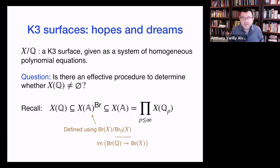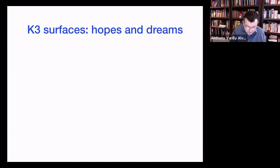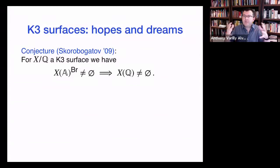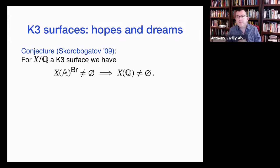One of the hopes and dreams is a conjecture of Skorobogatov — put in print in 2009 — that says: if you take a K3 surface over the rational numbers, and after carving out the conditions that the Brauer group tells you must be satisfied there is something left, then there must be a rational point. This usually goes by the phrasing that the Brauer–Manin obstruction is the only obstruction to the Hasse principle.